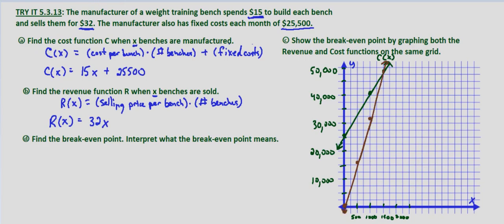Tentatively speaking, it looks like we're intersecting our revenue function and cost function at about 1,500 units. So it would be at $48,000.